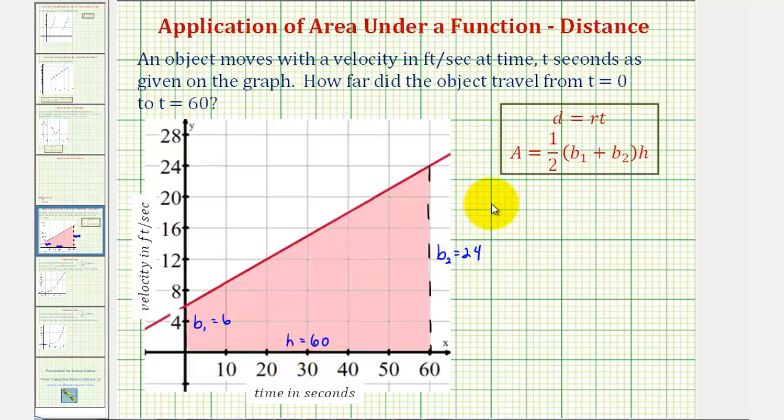So the area of the shaded region would be A equals one-half times the quantity b sub one plus b sub two, which would be six plus twenty-four, times the height, which would be sixty.